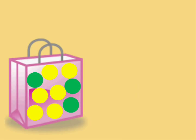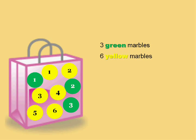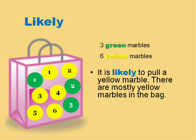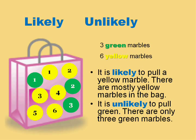This time I'll show you the marbles I have in the bag. If I were to pull out one marble, what color would it likely be? How can we decide whether we would be likely to pull out a yellow or a green marble? The easiest way is to count the marbles. Let's count — three green marbles and six yellow marbles. So it's likely we'll pull out a yellow marble since there are more, and unlikely to pull out green since there are only three.